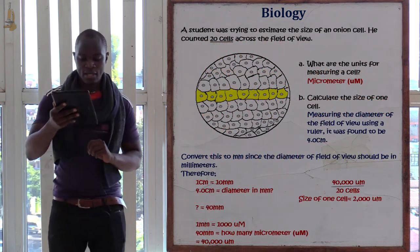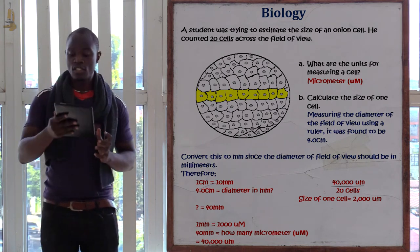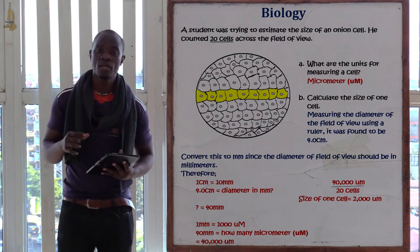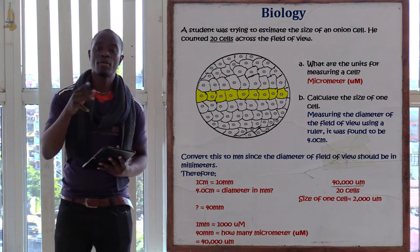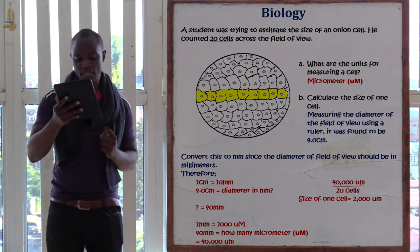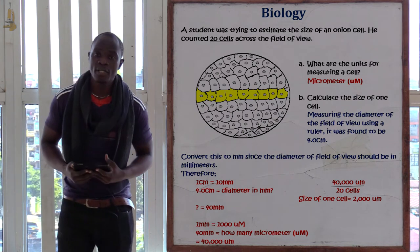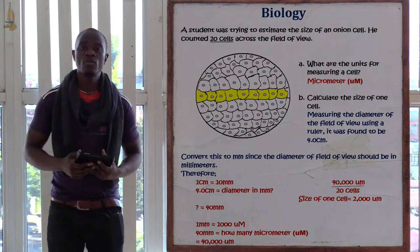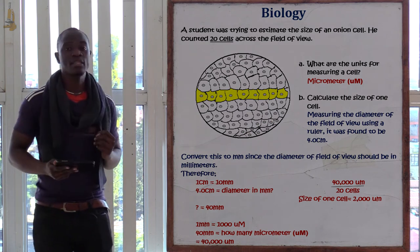The next question involves a student estimating the size of an onion cell. He counted 20 cells across the field of view, which is the region in the microscope where you can observe the cell. The units used to measure the size of a cell are always micrometers.